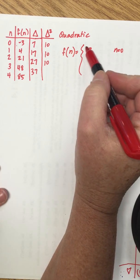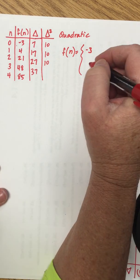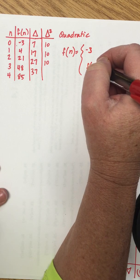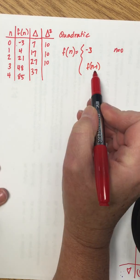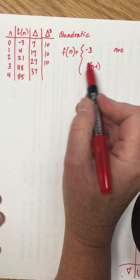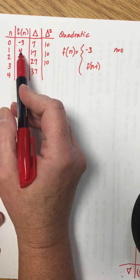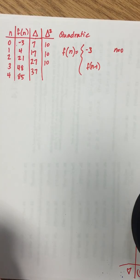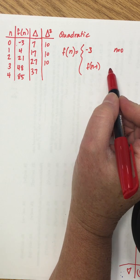To write the output that came before we're going to use f(n-1). Now we have to multiply or add or subtract or divide something to that to get to the next output. Since we know this is quadratic, we know that we're going to be adding something that's linear to that output that came before.